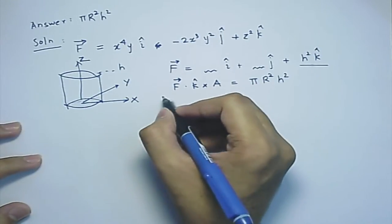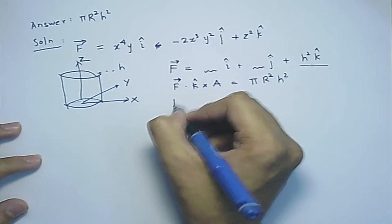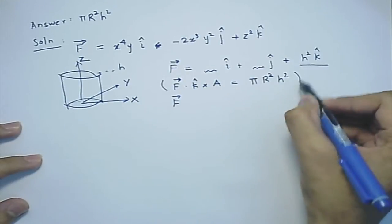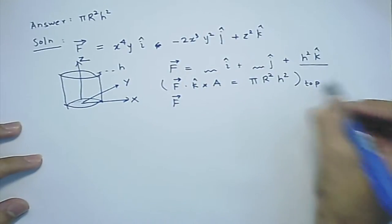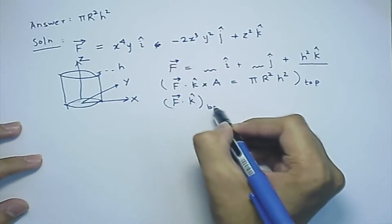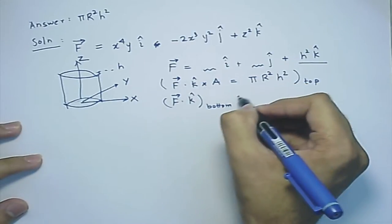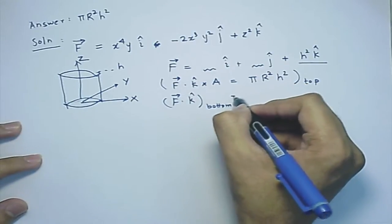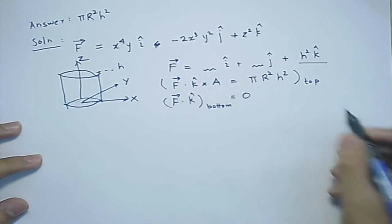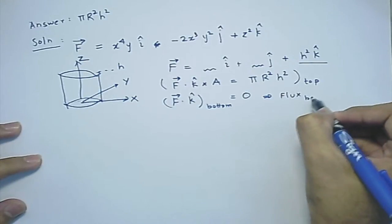For the bottom surface, F dot k-hat equals zero because z equals 0 there. So the flux for the bottom part is zero.